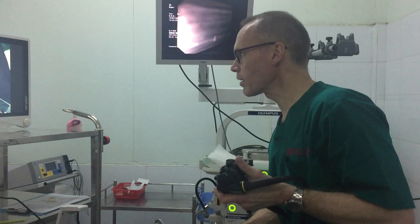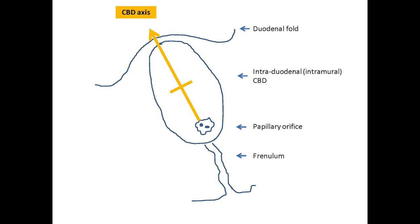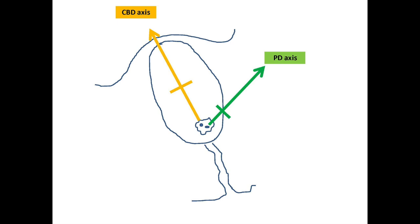This diagram illustrates the axis of the common bile duct and the pancreatic duct. You can see the yellow axis of the common bile duct is the direction which we need to aim the sphincterotome to achieve successful cannulation in line with the bile duct. The pancreatic duct runs more perpendicular — towards the one to three o'clock position — and needs a much shorter and flatter approach for successful cannulation.